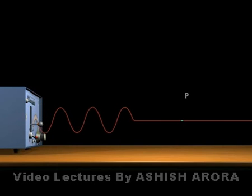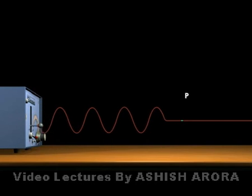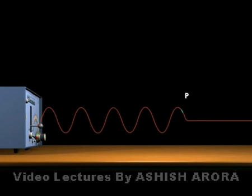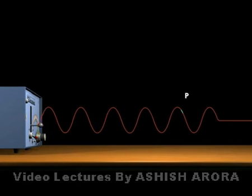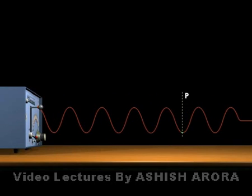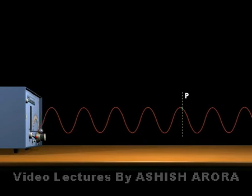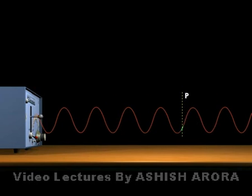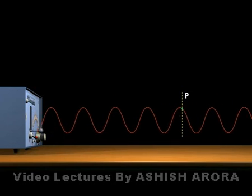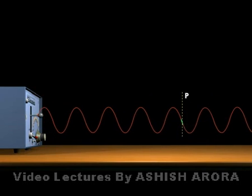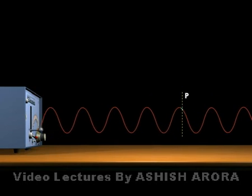Here we can see a small particle P which is in the path of the wave — just a particle on the string. It is just oscillating up and down, and correspondingly the wave is propagating energy in the forward direction. This is what is actually happening: every medium particle is oscillating at its own position in such a way that phase as well as energy propagates.